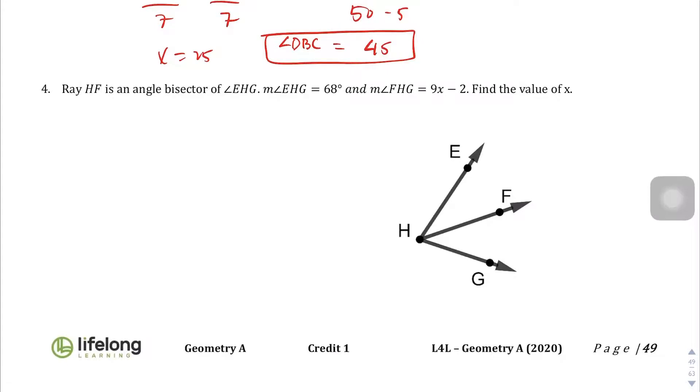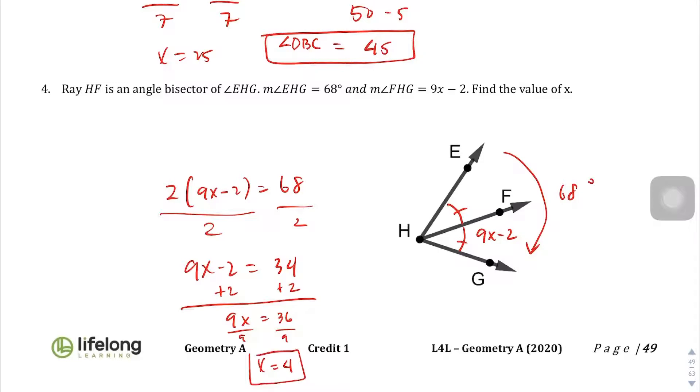Now question number 4. HF is the angle bisector, which means that this is now equal to this. EHG is 68. So the whole thing from here to here is 68 degrees. FHG, this thing right here is 9x minus 2. Find the value of x. Well, if we double 9x minus 2, it's going to equal 68 degrees. Let's divide this whole thing by 2 first. 9x minus 2 equals 34. Add 2 to both sides. 9x equals 36. Divide by 9. x equals 4 is our answer.